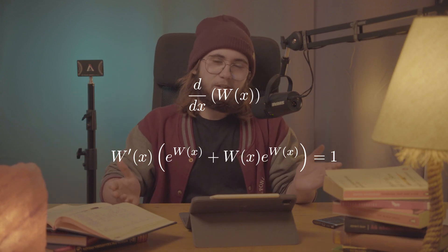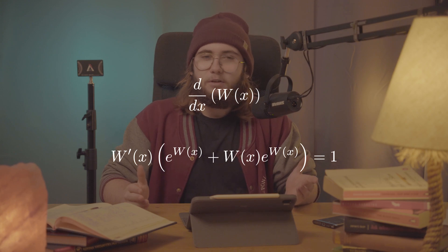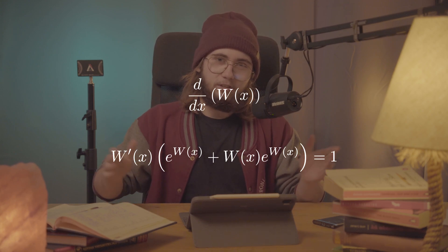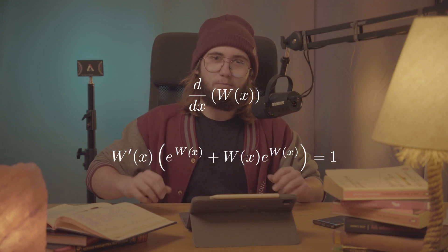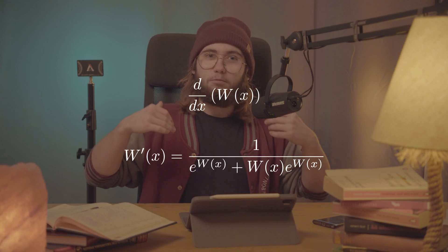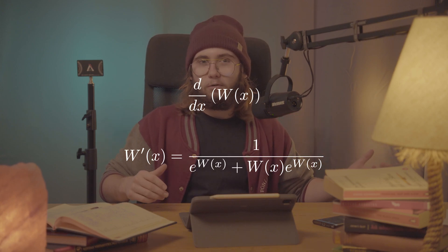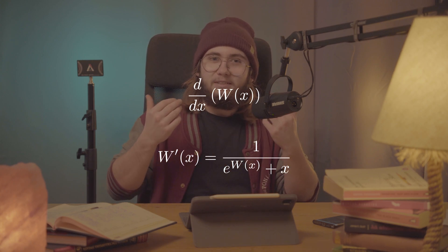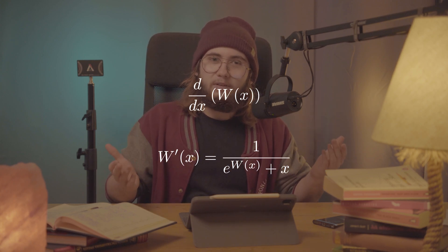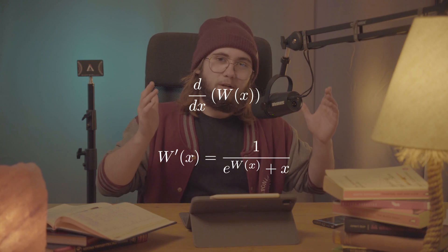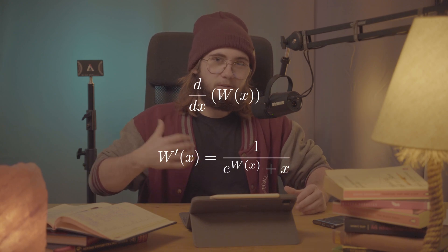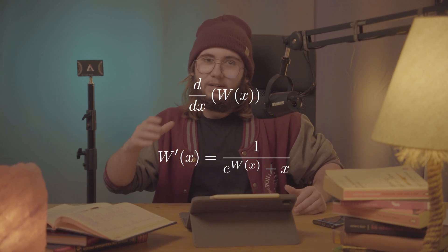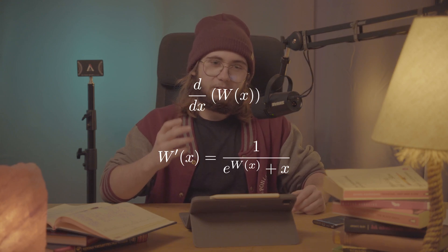Now factor out all of the W'(x) terms, then divide both sides by that factored expression. Recalling that W(x) · eᵂ⁽ˣ⁾ equals x, we arrive at the beautiful formula for the derivative of the Lambert W function: W'(x) = 1 / (eᵂ⁽ˣ⁾ + x). Hope you enjoyed it — see you in the next one!